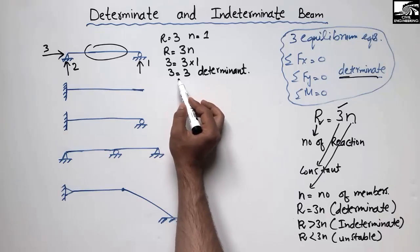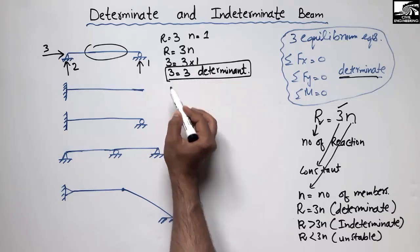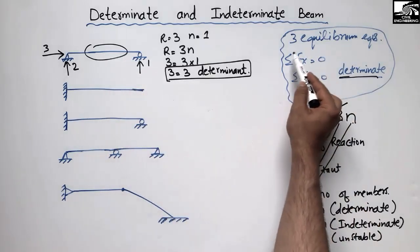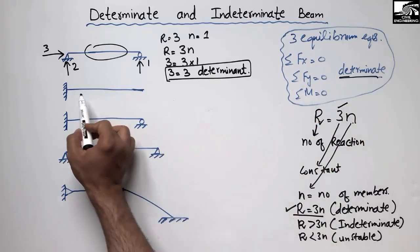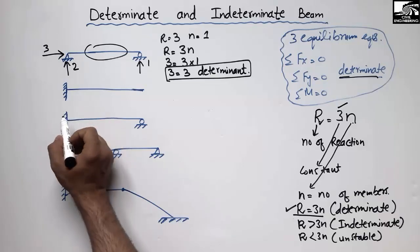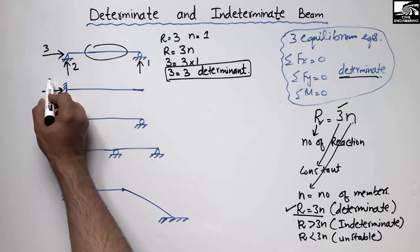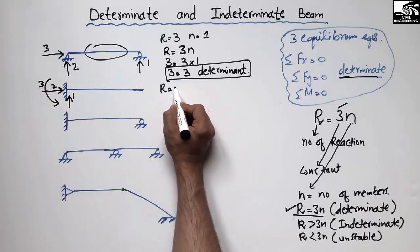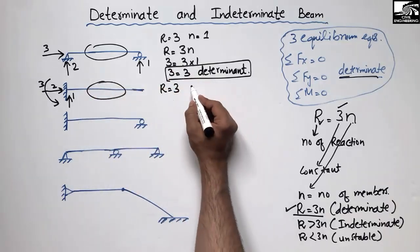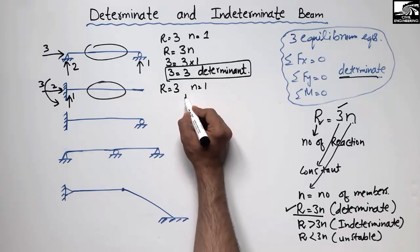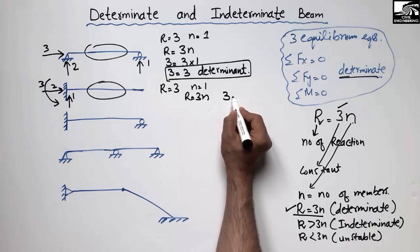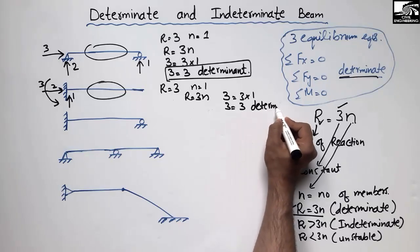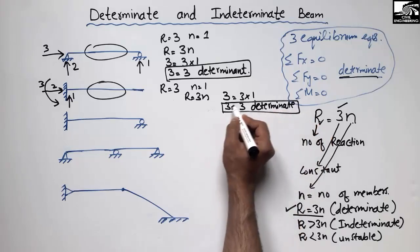The first example had R equal to 3N, confirming it is a determinate beam solvable with the three simple equilibrium equations. Now for the second case — a cantilever beam. A fixed support provides vertical reaction, horizontal reaction, and moment resistance: reactions one, two, and three. So R = 3, N = 1, giving 3 = 3 × 1, so three equals three. This is also a determinate beam solvable with the three equilibrium equations.